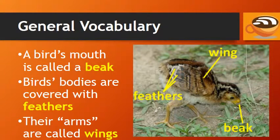General vocabulary. A bird's mouth is called a beak. Birds' bodies are covered with feathers, and their arms, which they use to fly, are called wings.